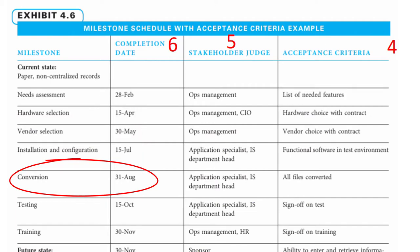Alternatively, if the conversion needs to occur after installation and configuration, this allows approximately 6 weeks for conversion. This timeframe may or may not be reasonable based on the number of files to be converted and the number of employees assigned. The project manager and team would need to be clear about the time it will actually take to complete the conversion, as this is likely to be an enormous activity in a large organisation.